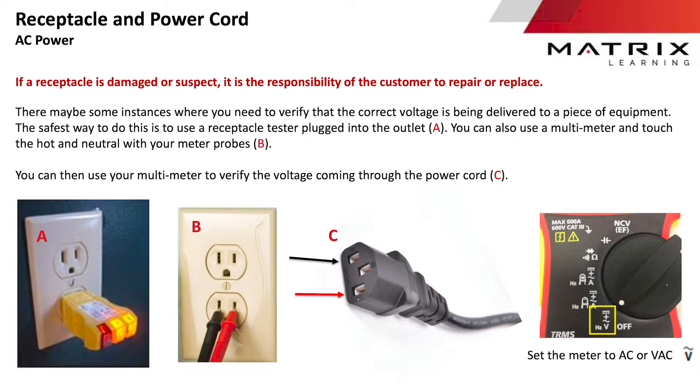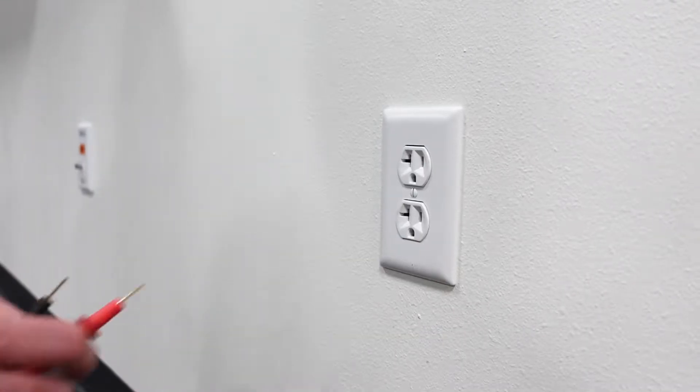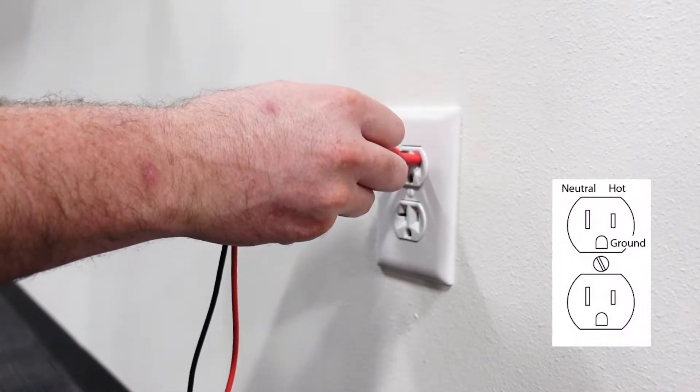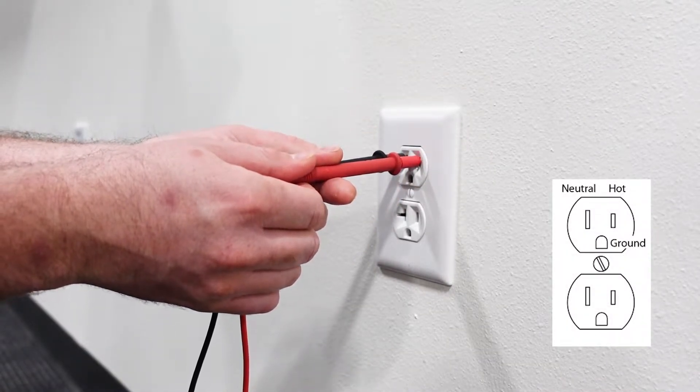Every power-related troubleshooting usually starts by verifying that the outlet is supplying appropriate power. To test the AC voltage of the outlet, you can use a multimeter and touch the hot and neutral with your meter probes.